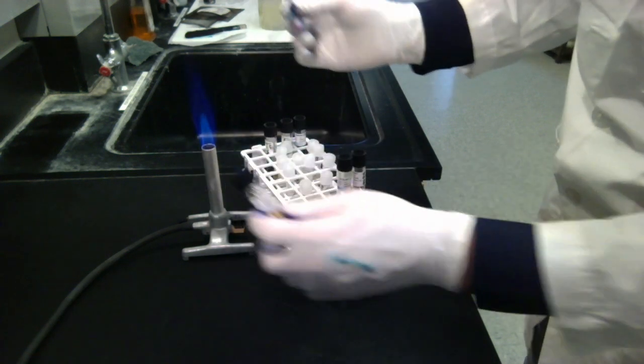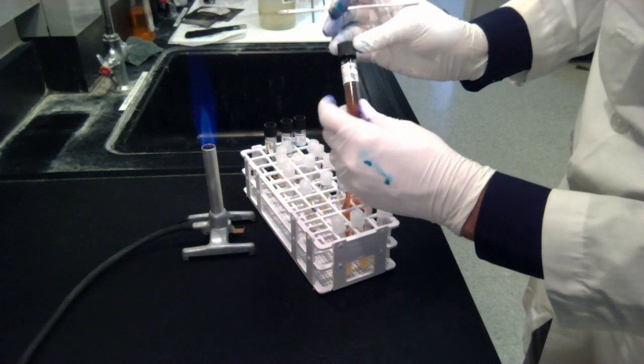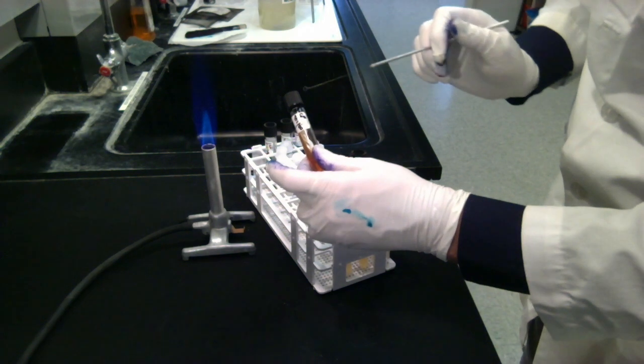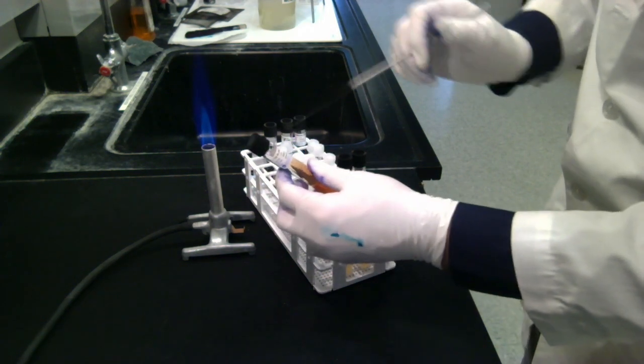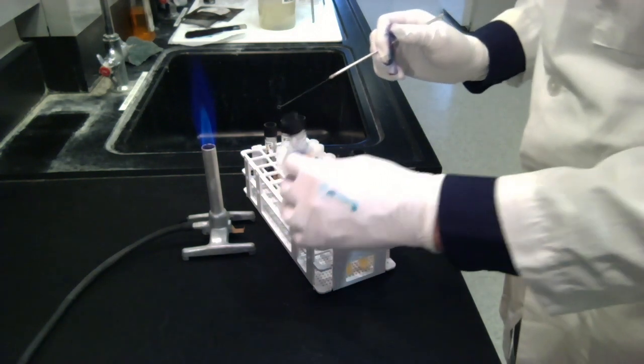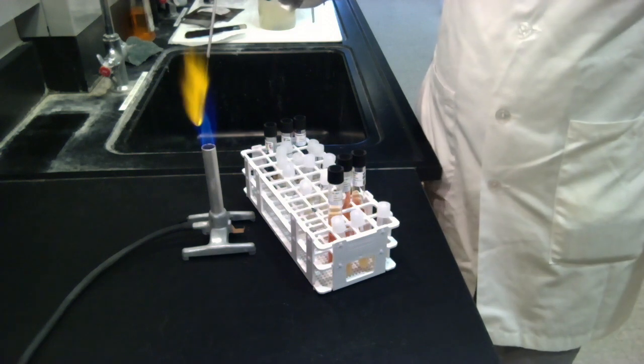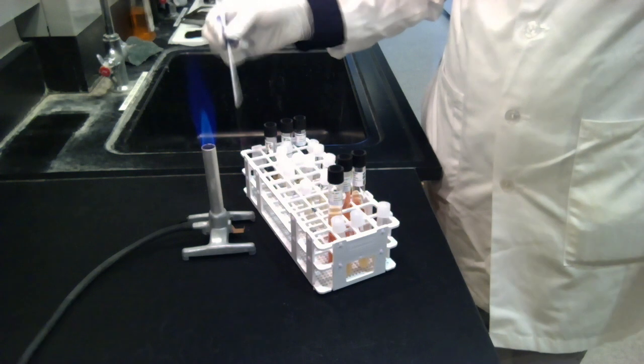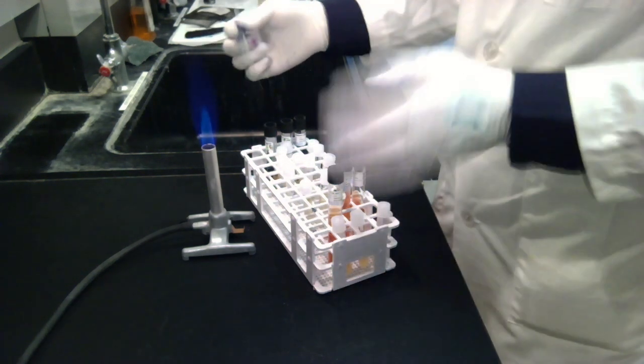You want to leave the cap loose like this. I like to tighten it all the way and then give it a half turn. That way the gases can escape. But also oxygen can enter in order to allow the bacteria to respire or breathe. And that's how you inoculate a TSIA.